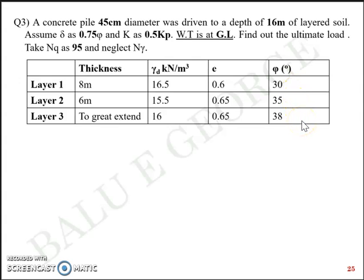This is more of a practical problem. You have three layers of soil and the pile which is 16 m in length passes through the three different layers. First layer is 8 m thickness, second one 6 m thickness, so that adds up to 14 m and the remaining 2 m is inside layer 3. The end bearing is on layer 3. Skin friction is distributed to layers 1, 2 and 3.